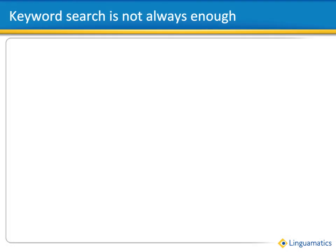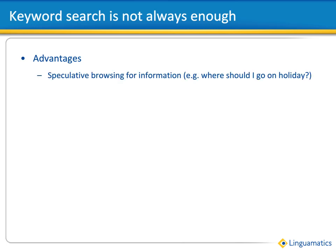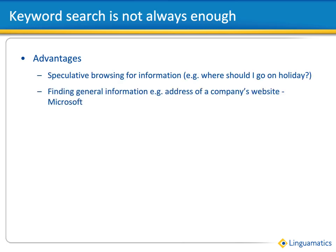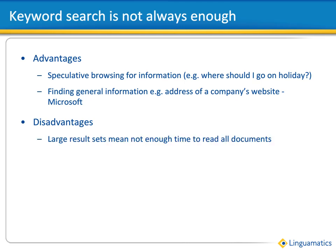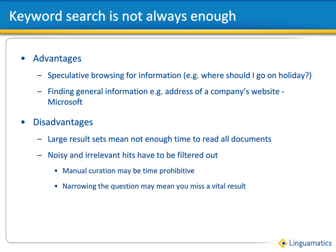Keyword search is useful and most people use it every day. It's generally good enough for when you are speculatively browsing around for information — for example, looking for places to go on holiday or finding a specific website such as Microsoft. However, it has significant limitations when the set of results from your search are very large. Most people don't have time to go through hundreds or thousands of results, and it becomes completely impractical to go through every single document. To reduce the result set, you may have to narrow the search to get rid of noisy or irrelevant hits, but care has to be taken to avoid narrowing it so much that you may miss a result.